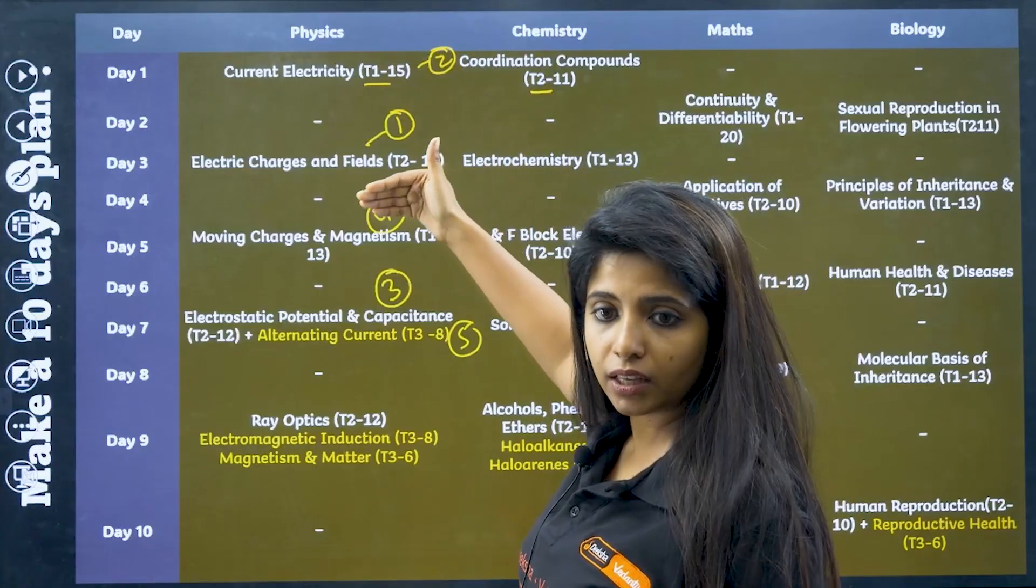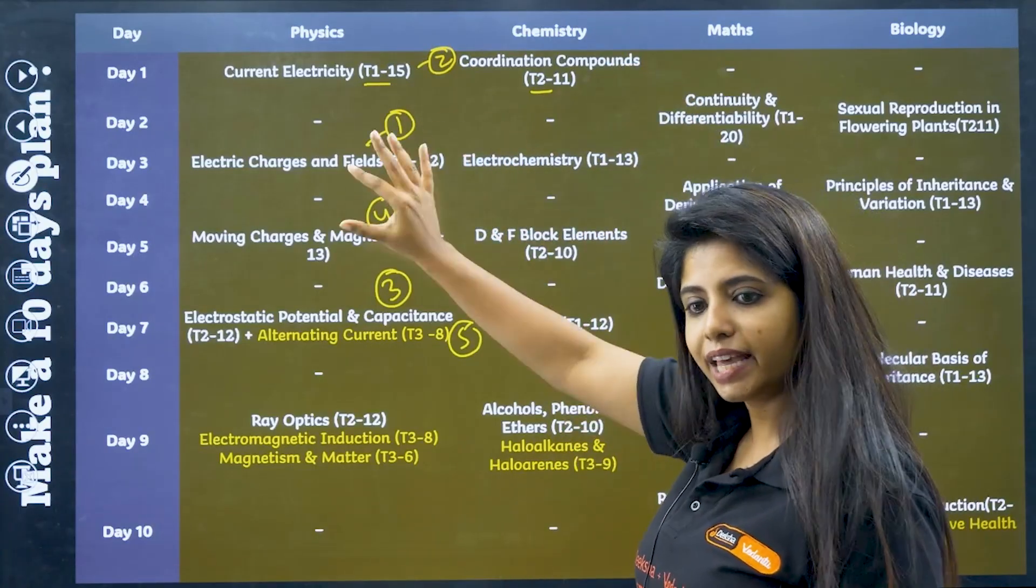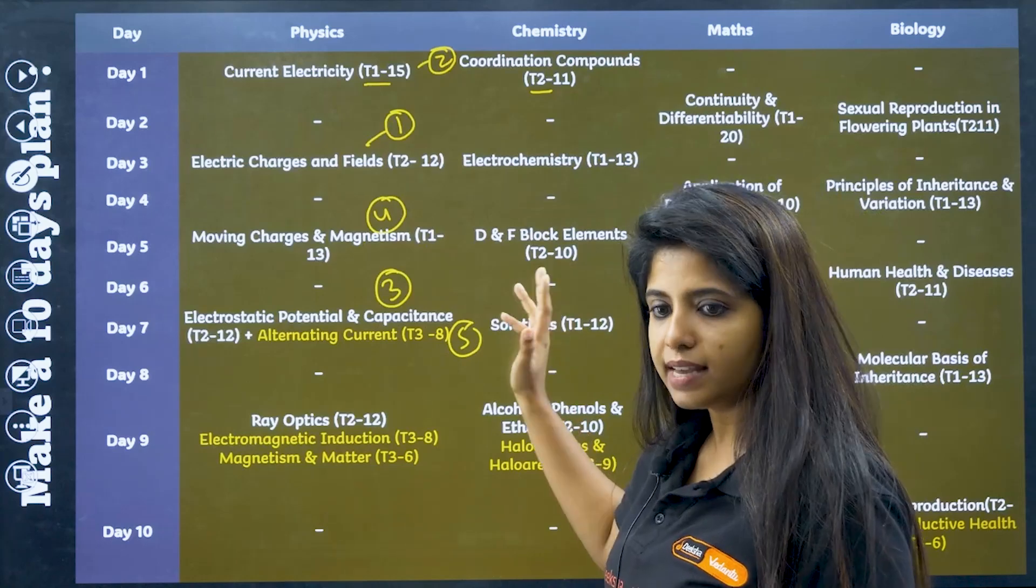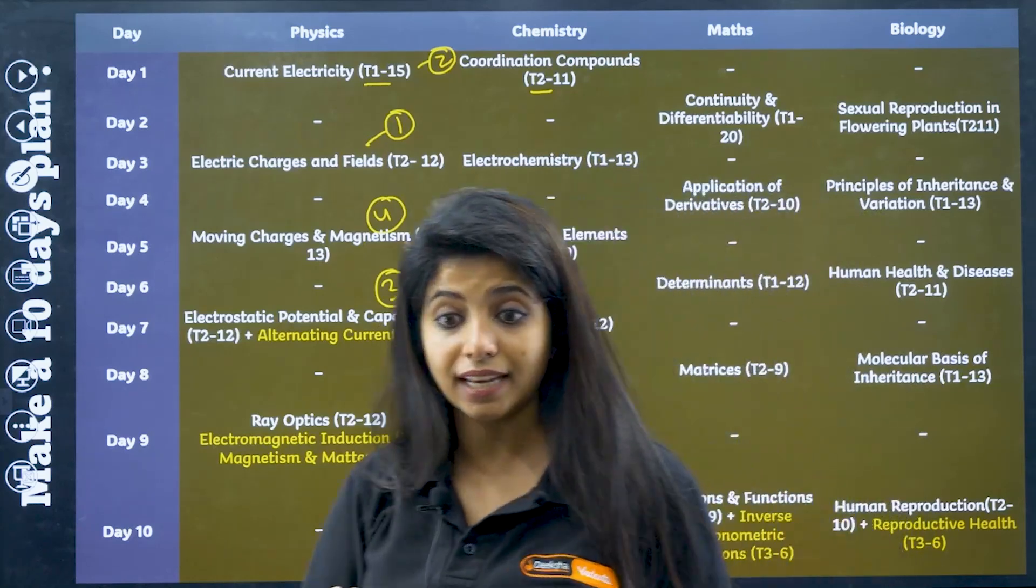So the second chapter, if you are taking current electricity, then take coordination compounds over here. Like that, you can manage. This is for your 10 days.